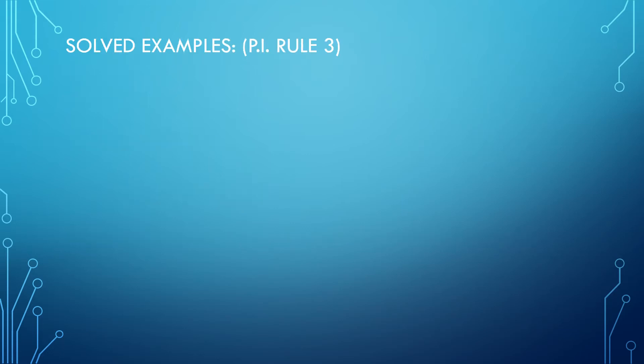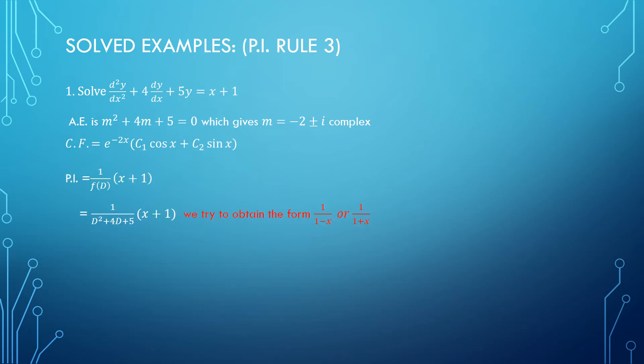Let me go with an example for Rule 3, which is for algebraic functions. For understanding purposes, I have considered a degree 1 polynomial on the right-hand side. First we will find the complementary function. All these rules we are studying are for particular integral, so throughout the chapter the complementary function rule remains the same.